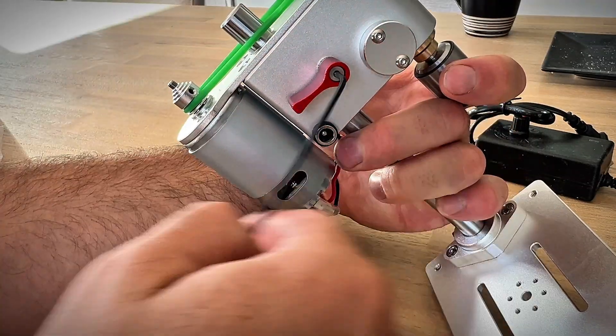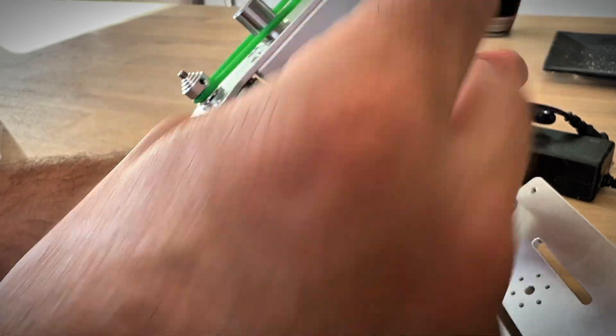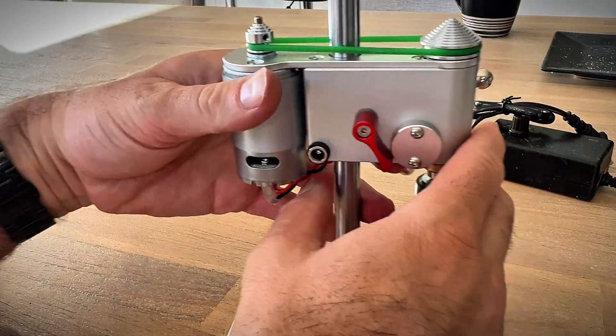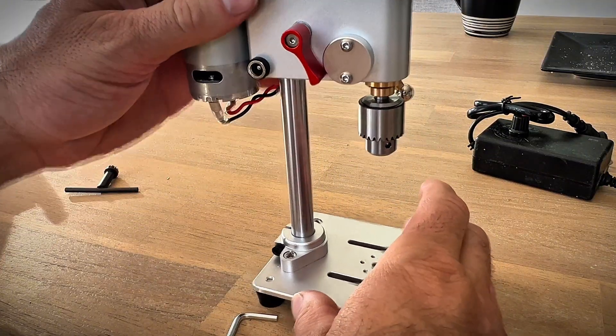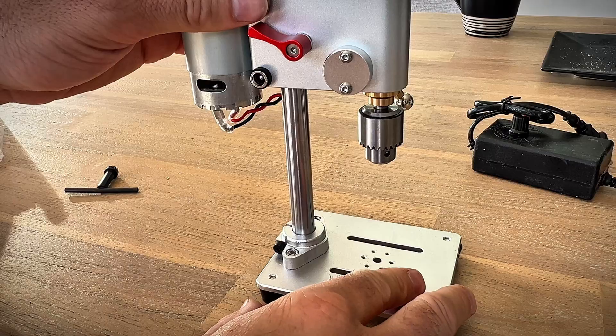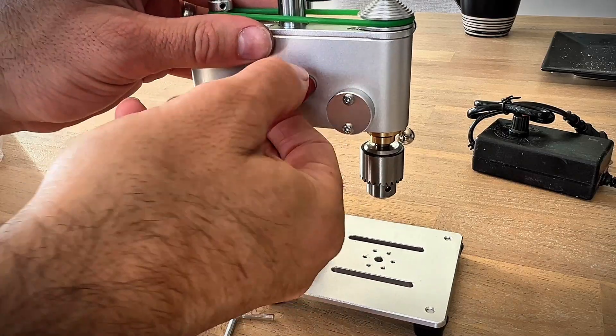It really is quite simple. So you can rotate it down, it's nice and loose, slide it to the height you want, and then rotate the lever back to lock it in position. Just like that. So easy.